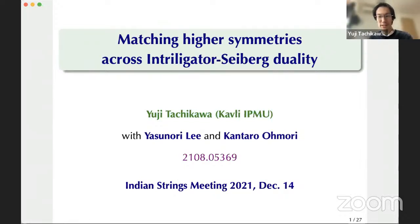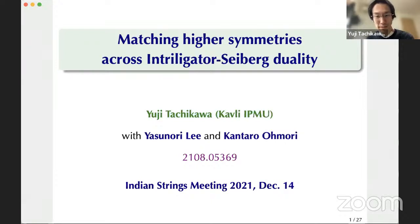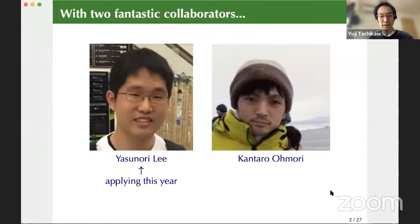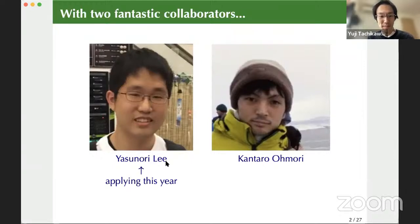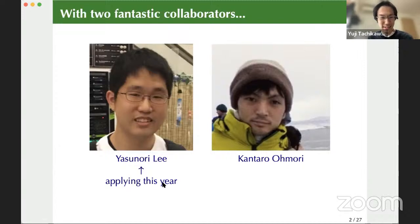Thank you very much for the introduction and for inviting me to this nice conference. Today I'd like to talk about how to match higher symmetries across Intriligator-Seiberg duality. This work is done in collaboration with two fantastic colleagues of mine, Yasunori Li and Kantaro Omori. Kantaro Omori was in the United States for a while and is now back at Hongo as an assistant professor. Yasunori Li is my student and he's applying this year — nudge nudge, wink wink.